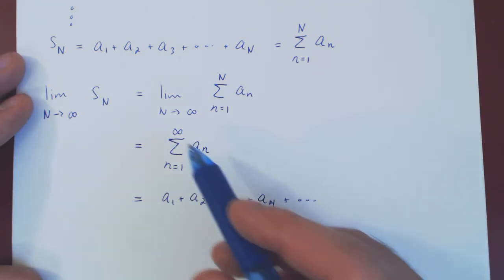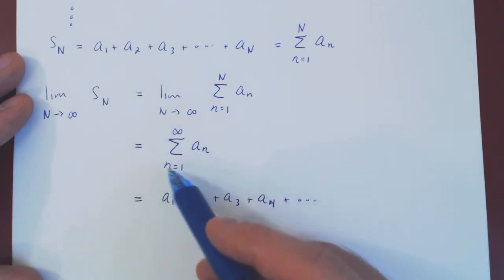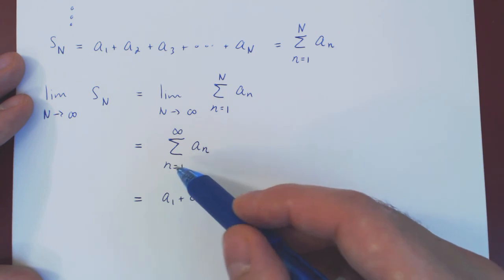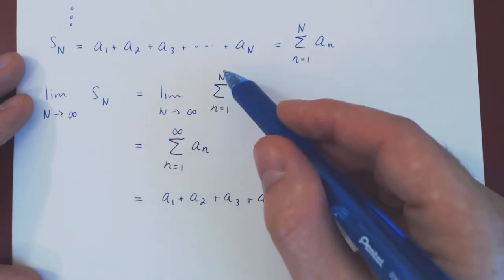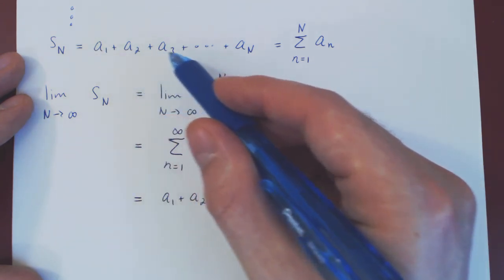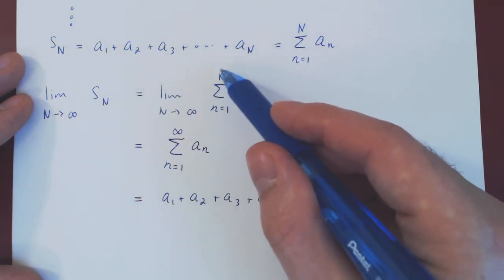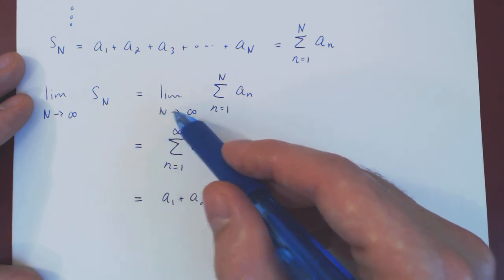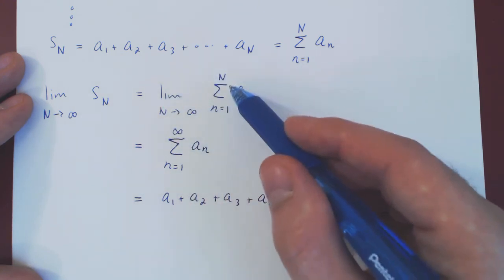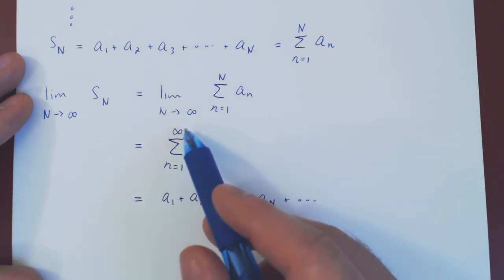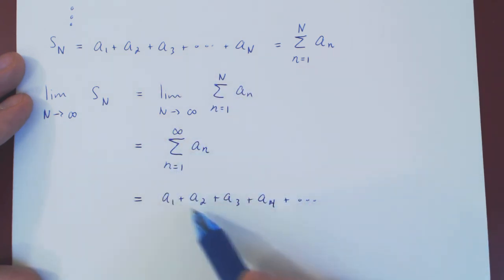Rigorously though, just as we did for improper integrals, to look at this rigorously, we say, well, we're going to sum a fixed number of terms of our sequence. So, from a1 up to a_n, and then we will let n approach positive infinity. So, this is thinking of the series more rigorously. This is thinking of the series more intuitively.